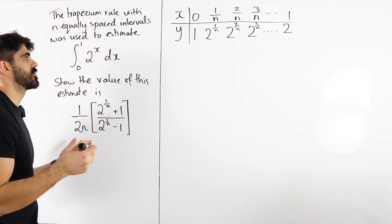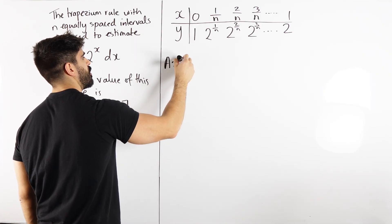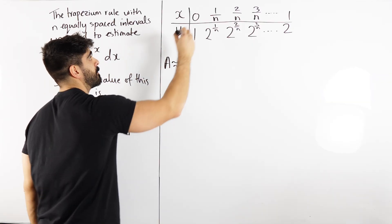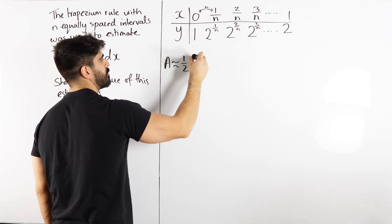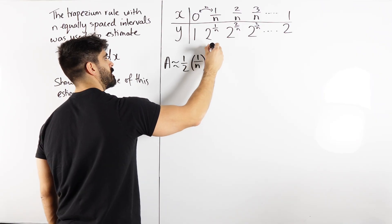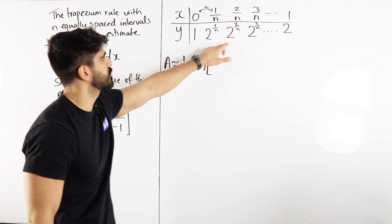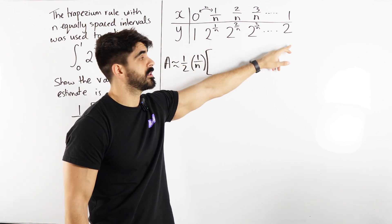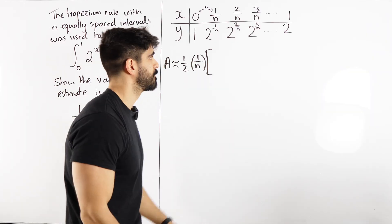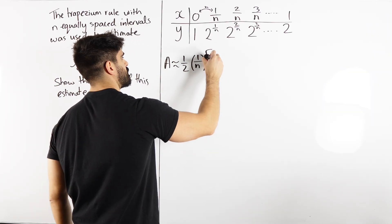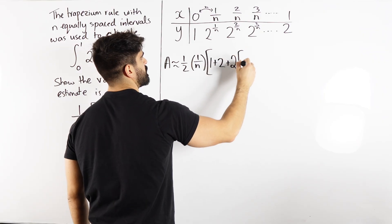Then we're going to apply the trapezium rule. So the trapezium rule is saying that the area under this curve is approximately a half h. Now h, remember, is always the width of the strips, so that'll be a half of 1 over n. Then you do the first term plus two lots of all of these, plus the last. I'm going to write first plus last, plus two lots of all of those middle terms.